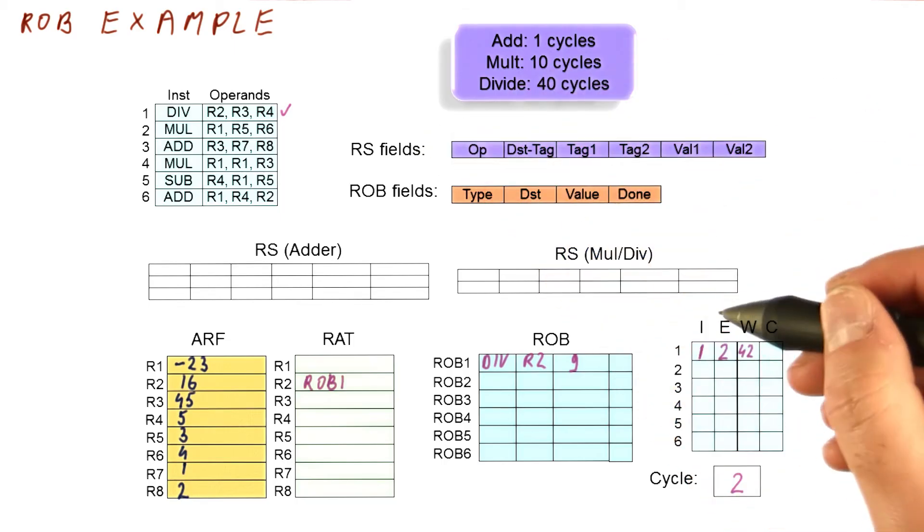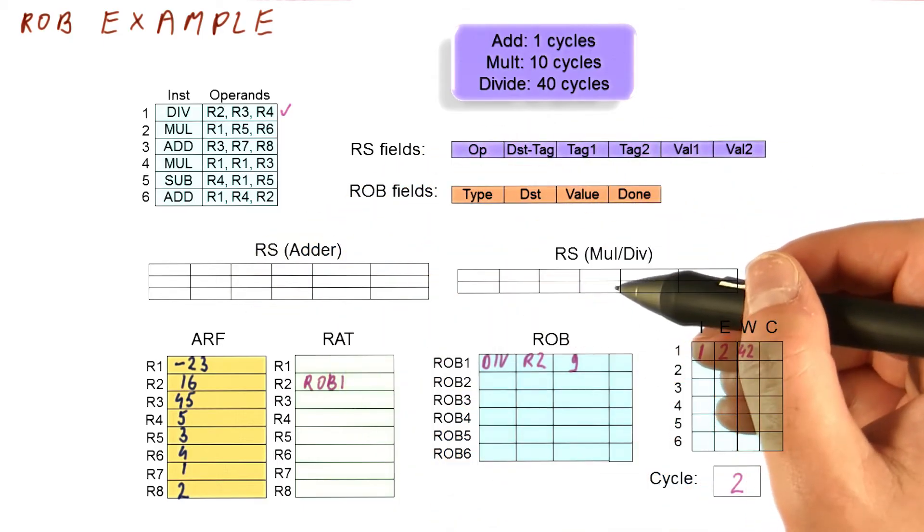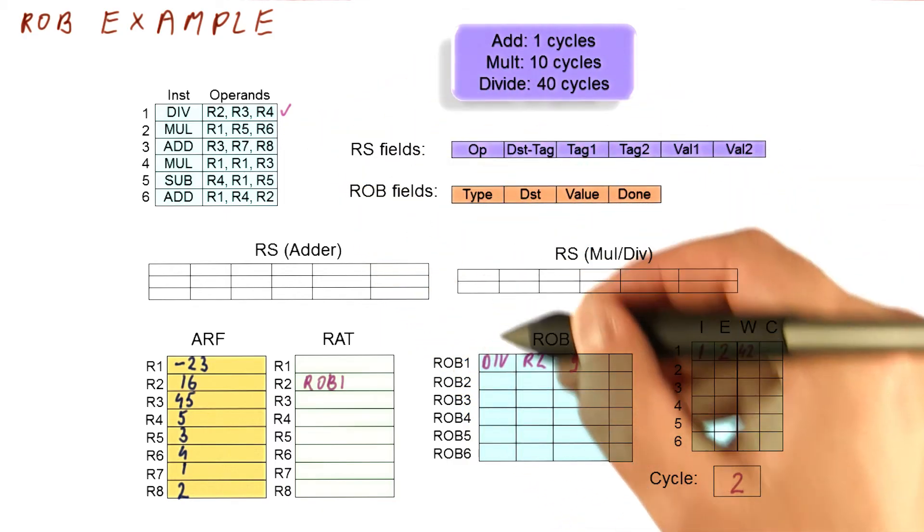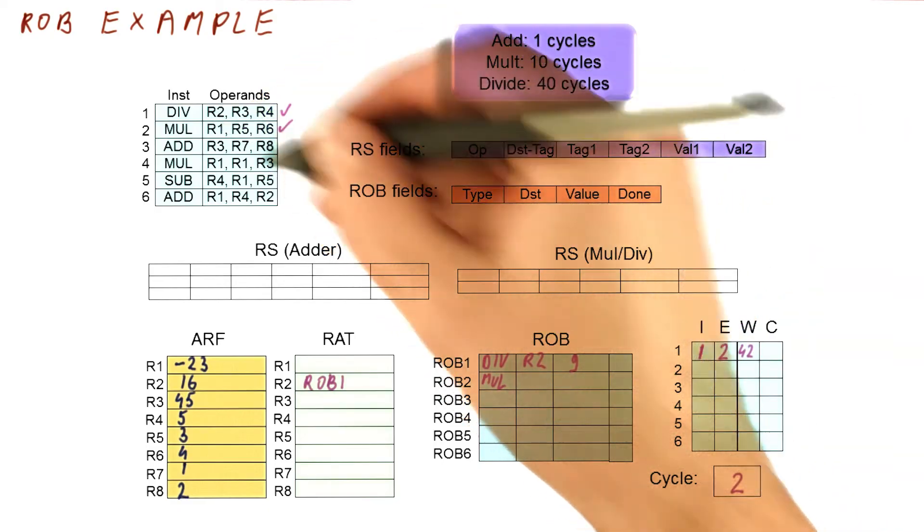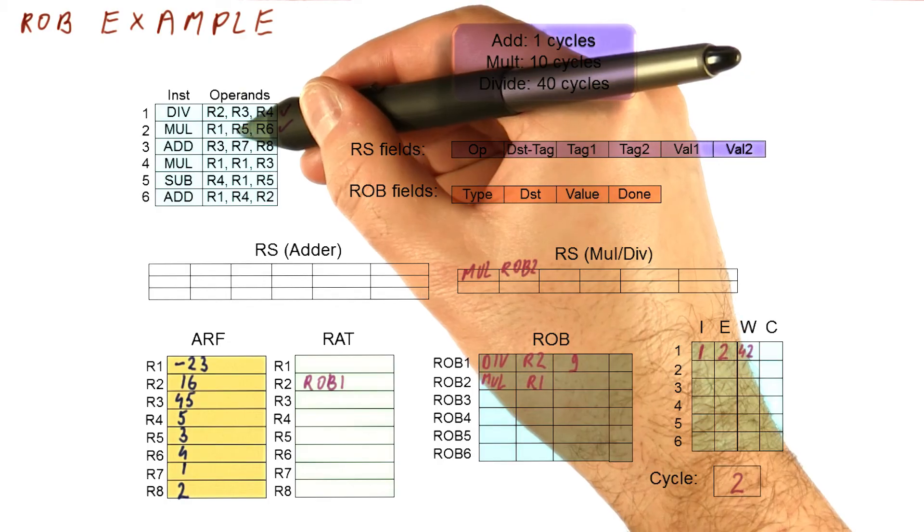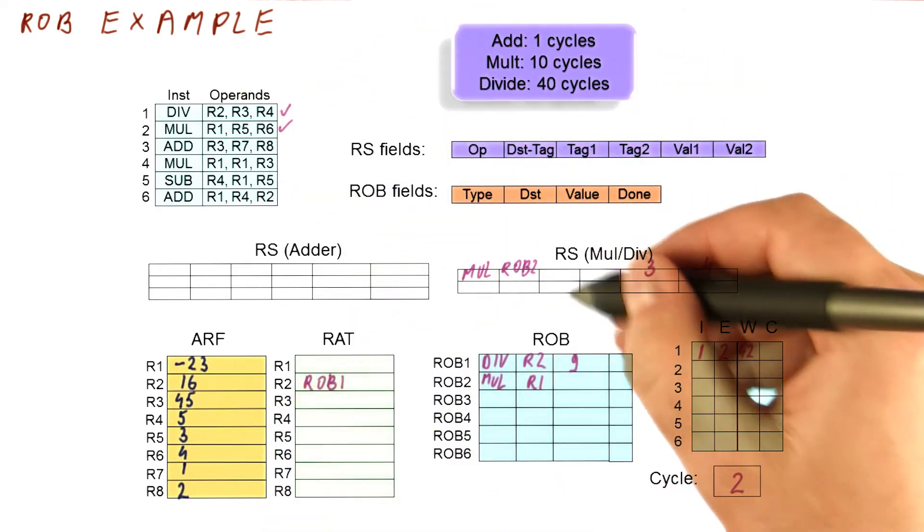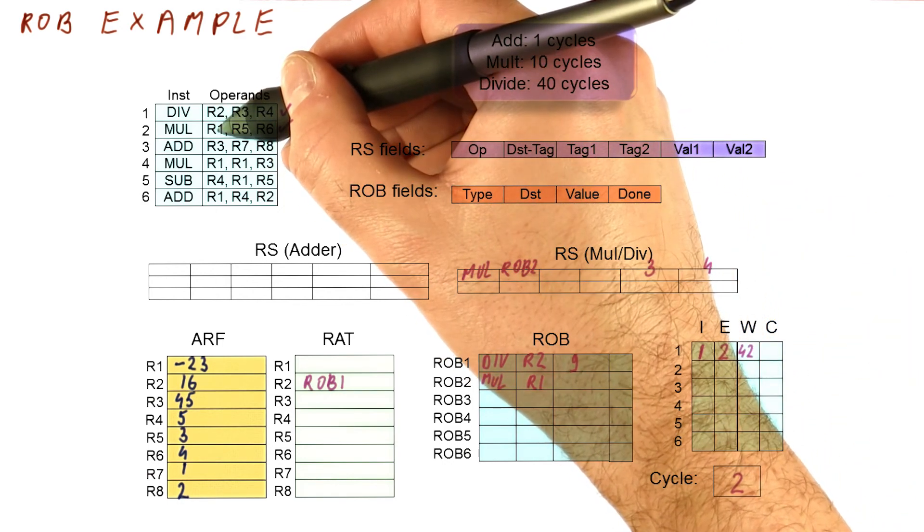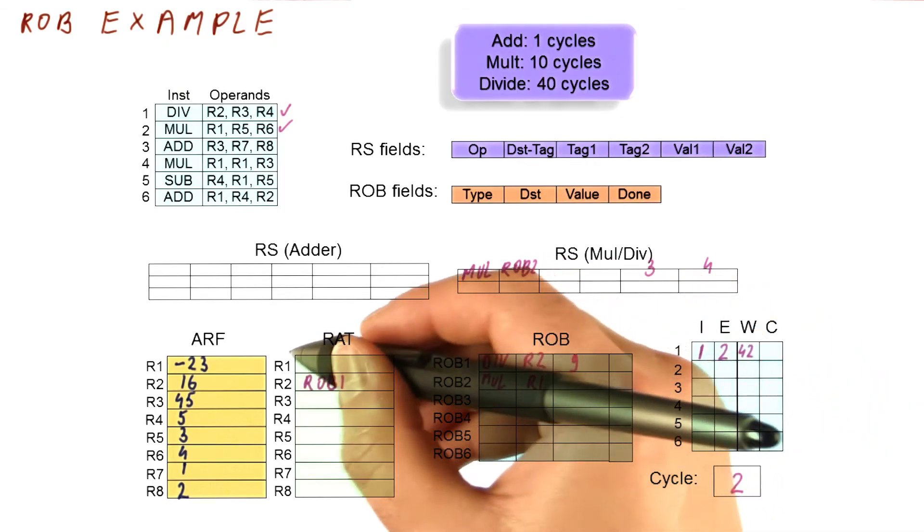Meanwhile, in cycle two, we're going to try to do the rest of the things. Can we dispatch something else? Nothing to dispatch. Can we issue something? The multiplication has a reservation station and ROB entry ready to be obtained, so we can do that. It's a MUL of R1. The tag for it is now going to be ROB2. Now, R5 and R6 are 3 and 4, so we have the values. We don't have to wait for anything, and R1 is a result.